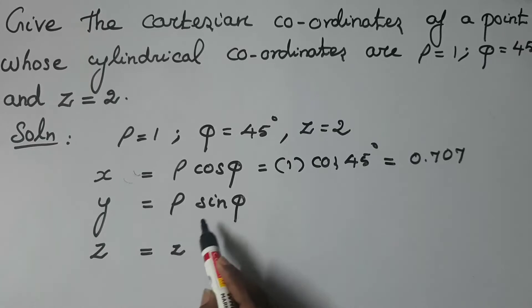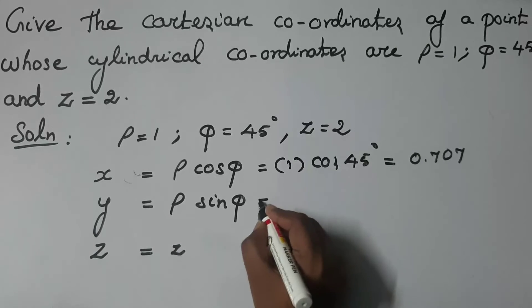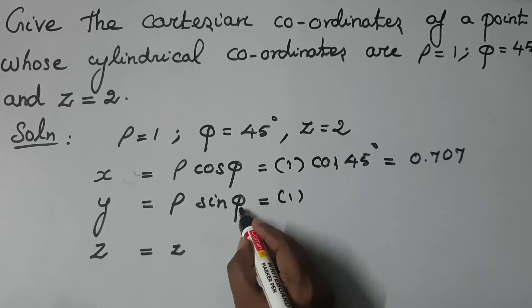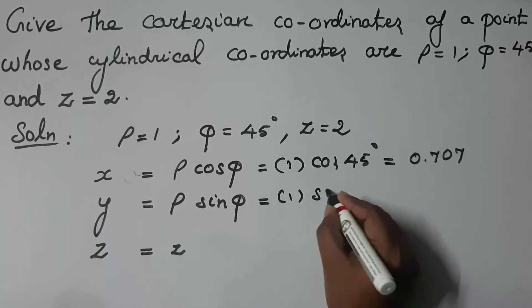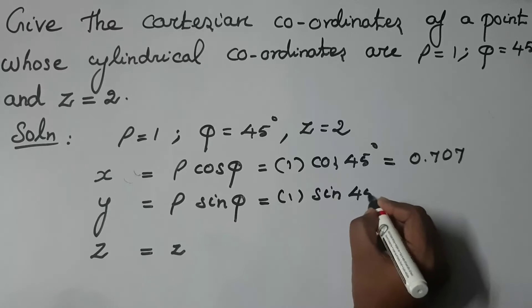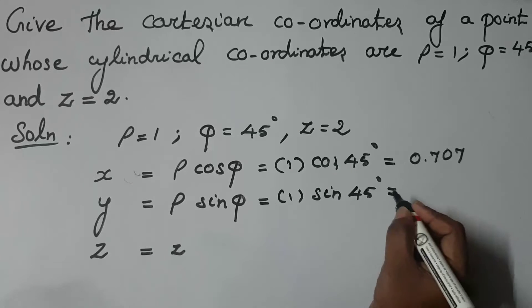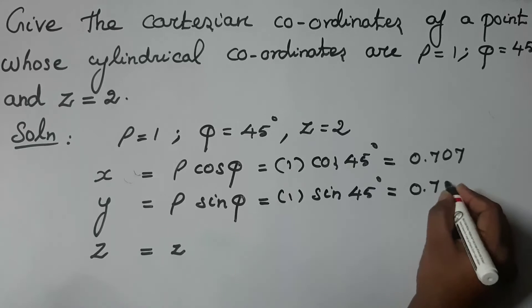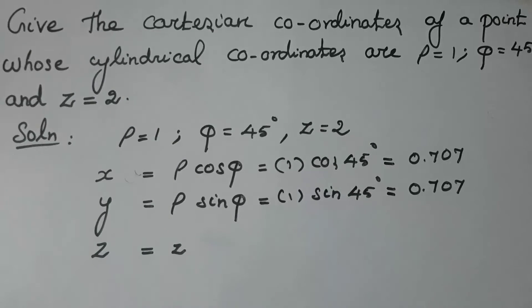Next, Y value is equal to 0.707. What is the value of ρ? 1. What is the φ value? 45 degrees. So sin 45 degrees, the result is equal to the same value, 0.707.